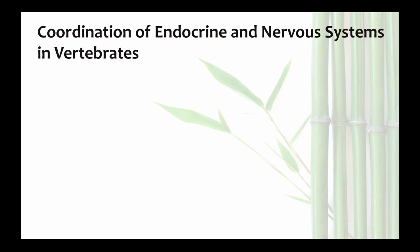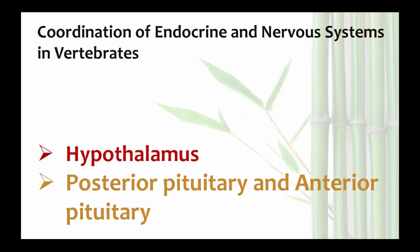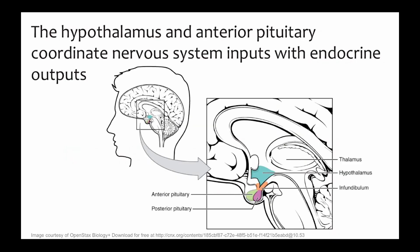So what is the link between these two systems? The hypothalamus receives information from the nervous system and initiates a response through the pituitary gland, which is composed of two different structures: the posterior pituitary and the anterior pituitary. Here is a diagram that shows you where these structures are located. The hypothalamus is an almond-sized structure below the thalamus in the brain, and it is a part of the limbic system.